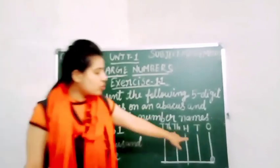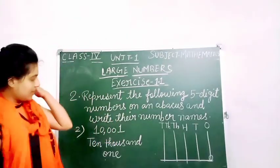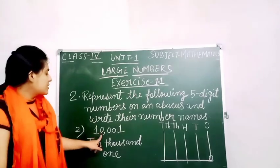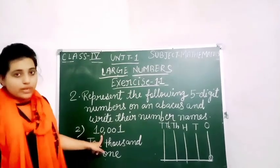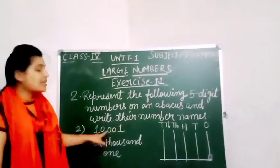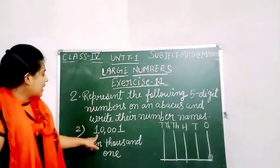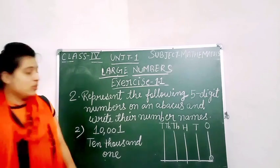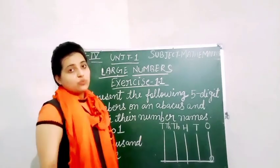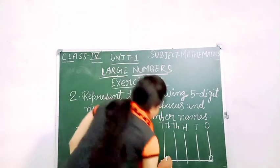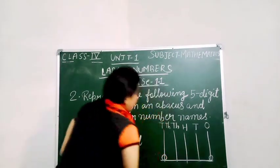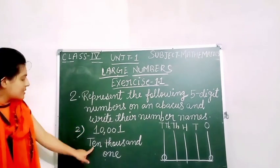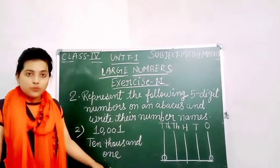In the 10's, 100's, and 1000's places there are no numbers, so we draw no beads in those places. And in the 10,000's place we have 1 bead. So the number name of this number is ten thousand and one.